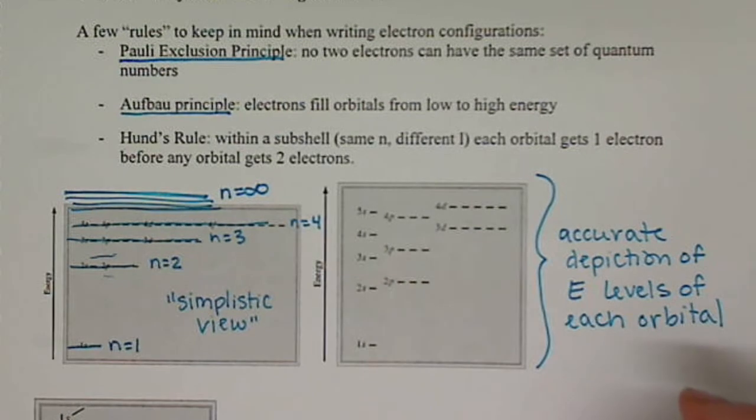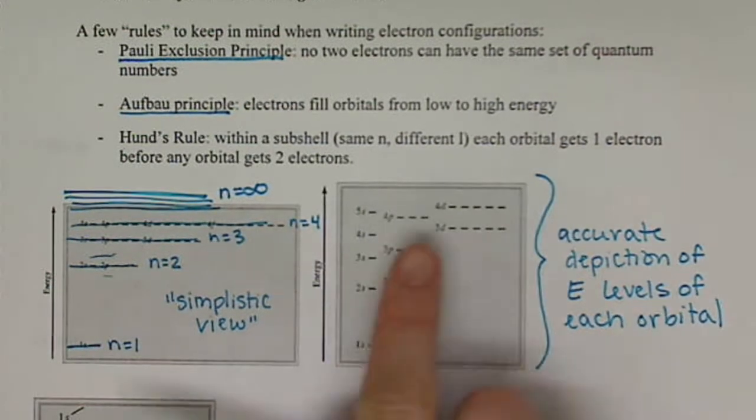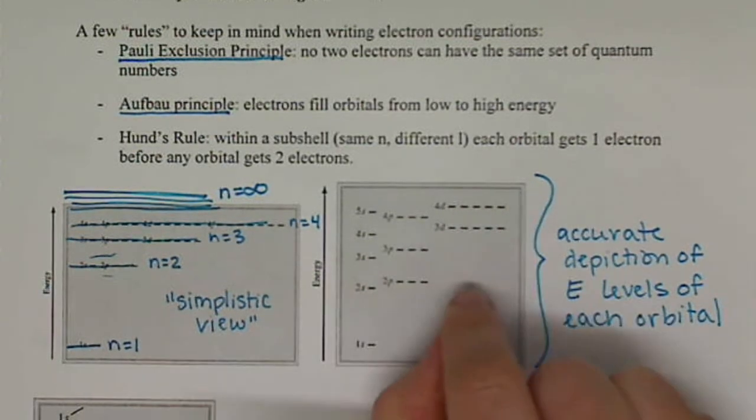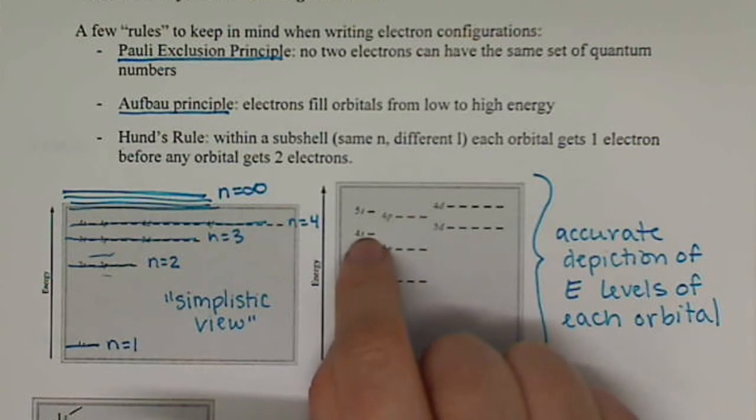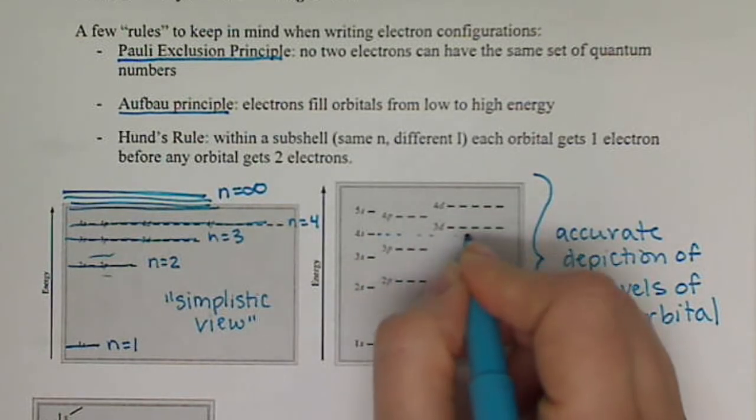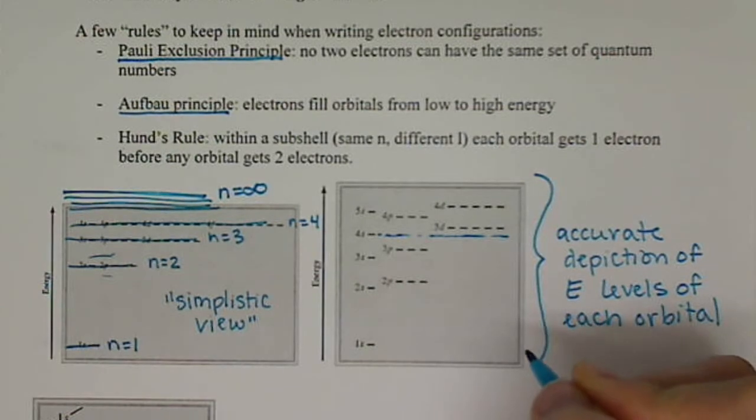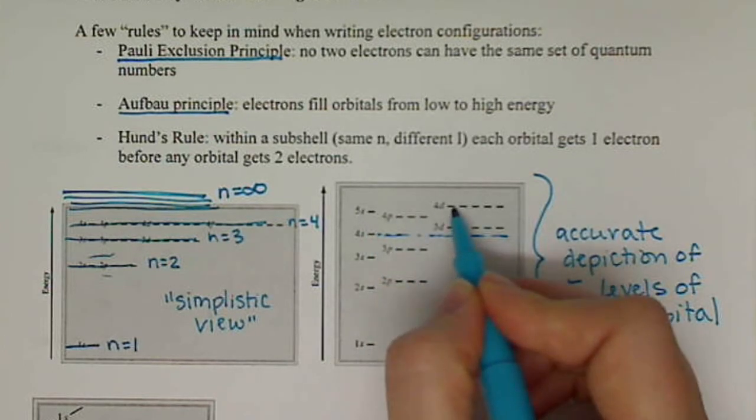So s orbitals are going to be lower in energy than the p, which are lower than the d, which are lower than the f. One thing to notice here is that when we do this split, what happens is our 4s is actually lower in energy than our 3d. And our 5s is again lower in energy than the 4d.